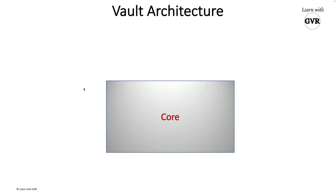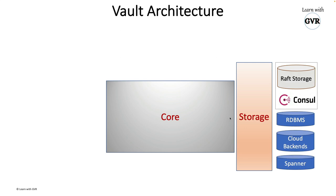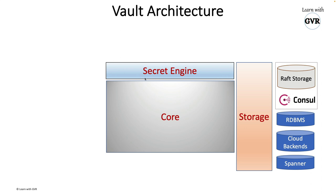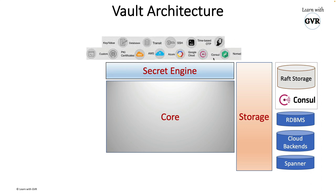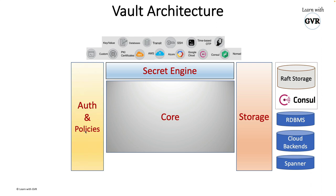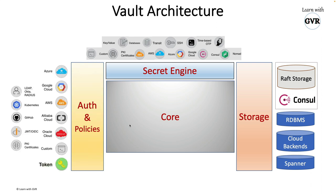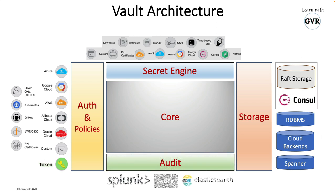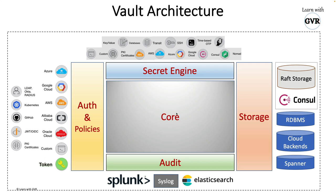From the vault architecture point of view, vault has a core engine with a storage as a detachable layer - either internal or external storage. It has a secret engine where you can store a variety of secrets. Most importantly, vault has authentication and policies to control access, plus audit capabilities for tracking secret access and retrieval. This is a typical single vault system.